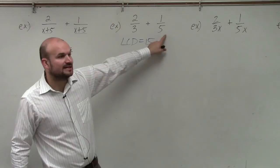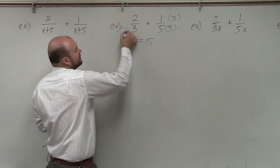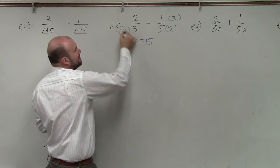Then I determine, so if I need to get 5 to be 15, I need to multiply by 3 over 3. And to get 3 to be 15, I need to multiply by 5 over 5.